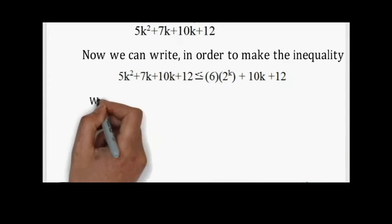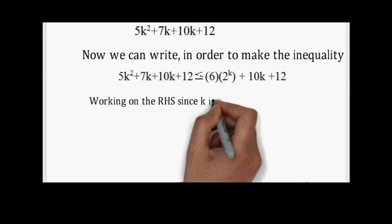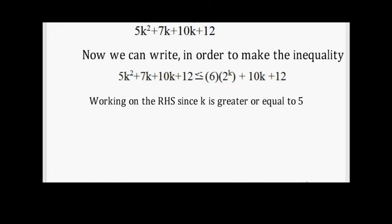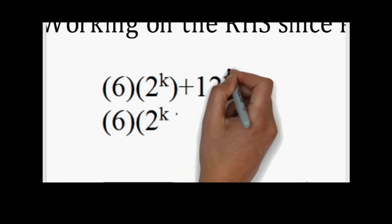We will work on the right-hand side. Since k is greater than or equal to 5, we will replace 10k with 12k and factor.